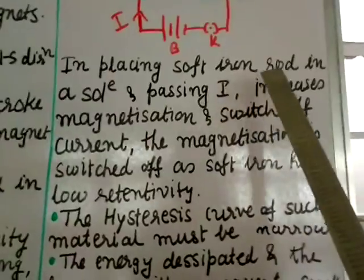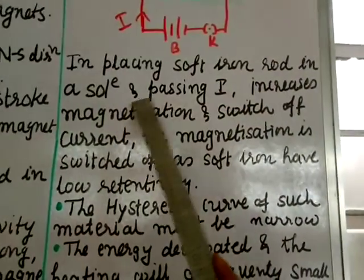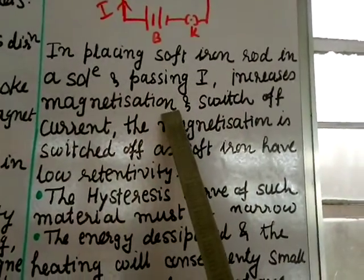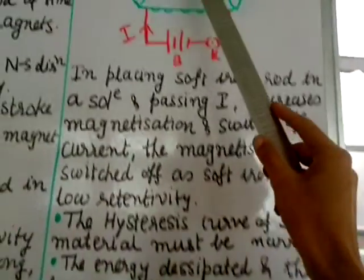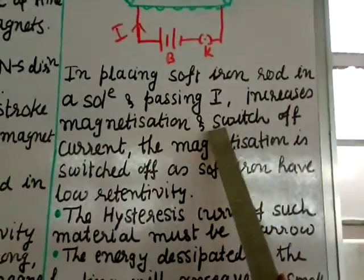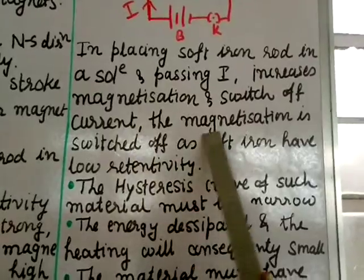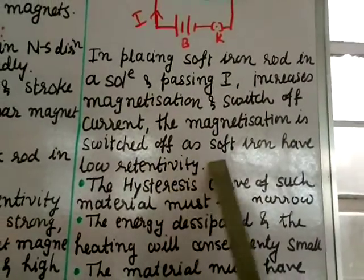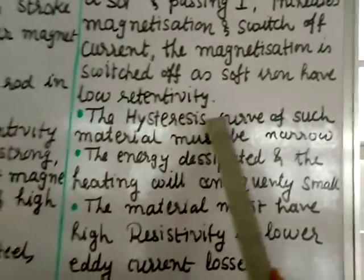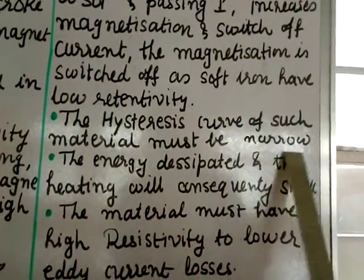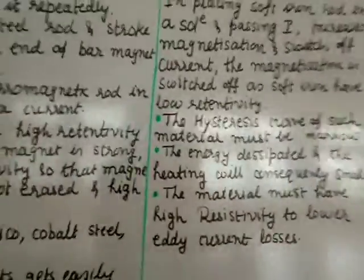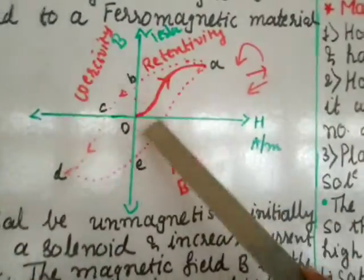In placing soft iron rod in a solenoid and passing current increases magnetization. When you switch off the current, the magnetization is switched off as soft iron have low retentivity. The hysteresis curve of such material must be narrow. This area should be narrow.